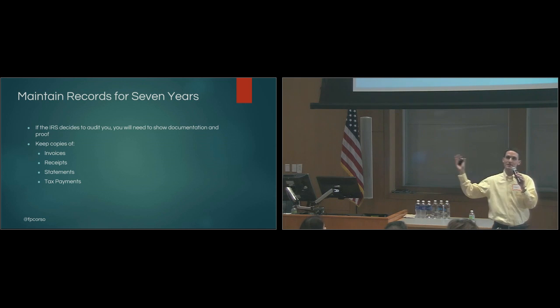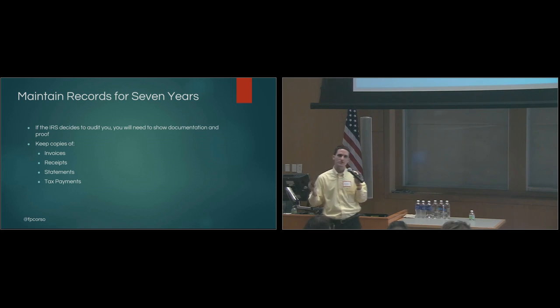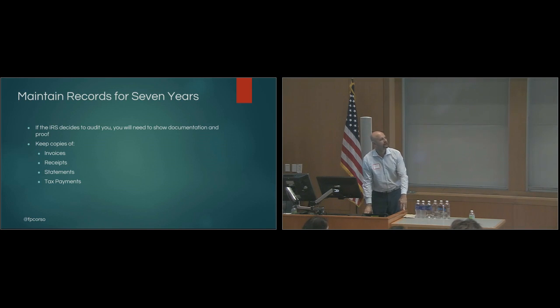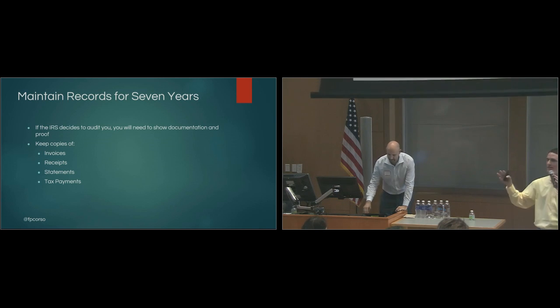So, you want to maintain your records. If you keep your receipts all year and then you throw them out at the end of the year and then IRS audits you the following year, you're not going to have those receipts anymore. So, you want to keep those receipts and all of your documentation usually seven years. If they decide to audit you, you'll need to show documentation. So, keep copies of invoices, receipts, statements, tax payments, etc. Anything that goes into your taxes at the end of the year that you might need to show proof on? So, I usually keep a filing cabinet. I have one at my desk at my home office and I pretty much just keep all of my documentation for the business in that filing cabinet. At this point now I have two filing cabinets, but it's usually best practice just to keep all your documentation in one place and that way you have it.